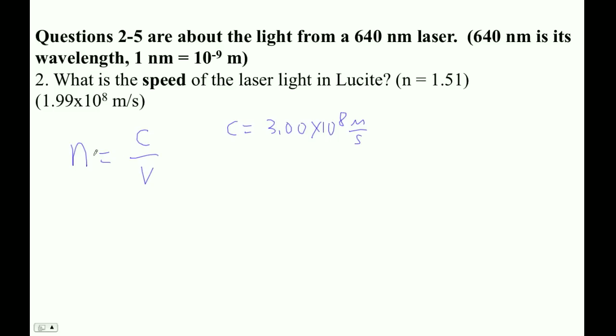And so the bigger the index of refraction, the more it slows down. So in this case, 1.51 equals 3.00 times 10 to the eighth meters per second, divided by that velocity that we're trying to find. So that's the speed in the medium.